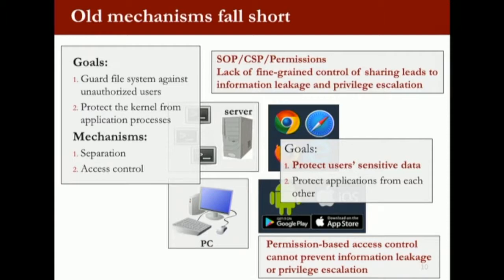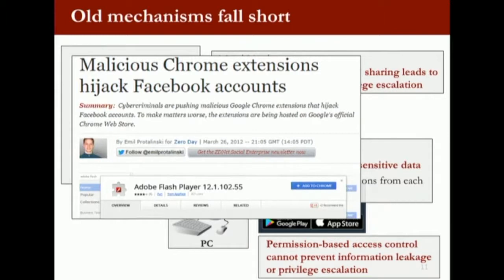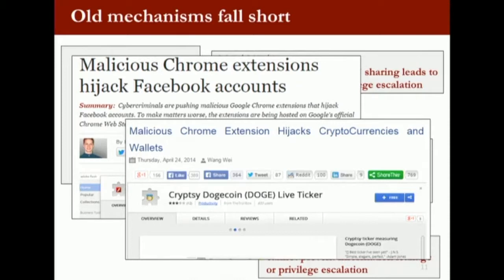The browser has a similar problem. The browser does have SOP (same origin policy), CSP (content security policy), and for browser extensions Chrome and Firefox have a permission system where the extension asks permission from the user. Based on what permission is granted, the extension can do certain things and is barred from others. The problem is that even with all these mechanisms, we still don't have fine-grained control over data sharing within the same page. There are real-world malicious Chrome extensions trying to steal or hijack users' Facebook accounts, and news about malicious extensions trying to hijack cryptocurrency wallets.